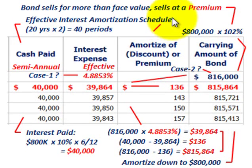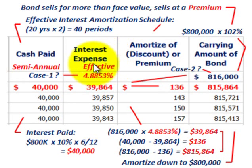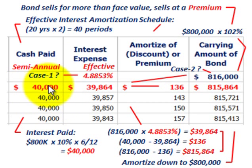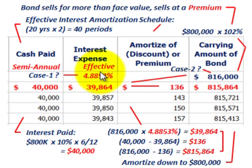When dealing with bonds using the effective interest method, you have to set up an amortization schedule. We're going to look at two cases. Case one is where we don't know the effective interest rate. We're given the semi-annual payments — 40 of them in this case — along with the payment amount and the beginning issue price or beginning carrying value of the bond, which was $800,000 times 102%. We'll have to determine the effective interest rate from those numbers.